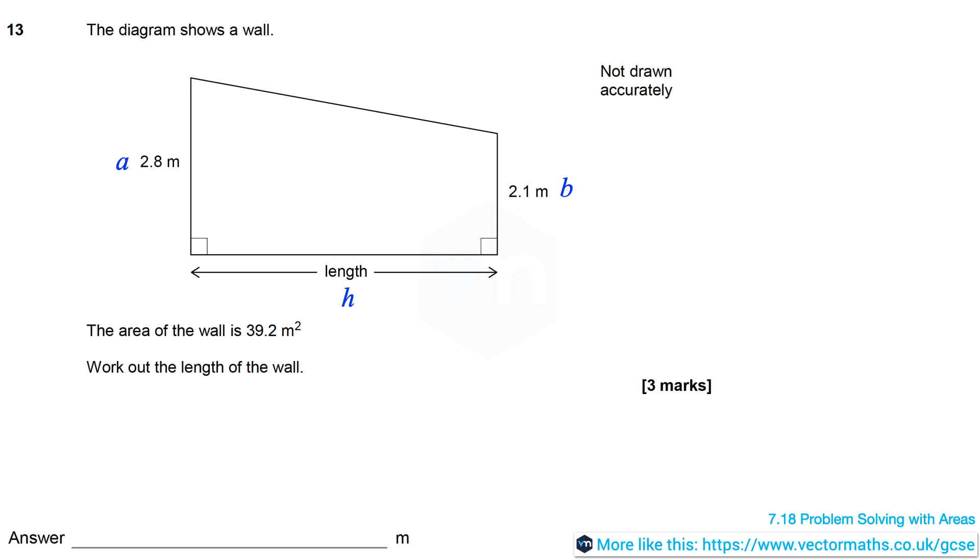Now the formula for the area of a trapezium is a half times the sum of the lengths of the parallel sides times the distance between them.